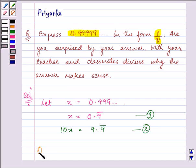Let this be the first equation and this be the second equation. Now on subtracting equation 1 from equation 2, we have: